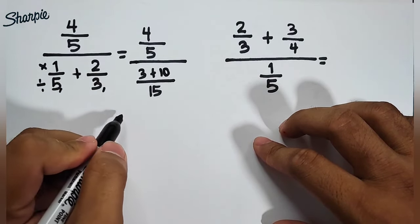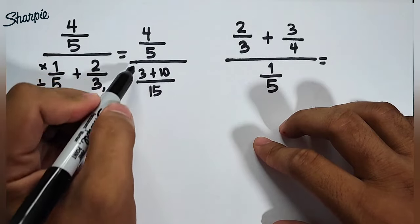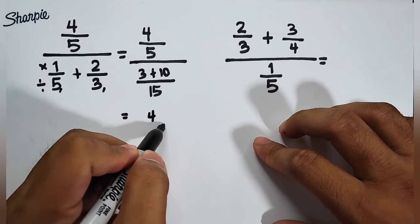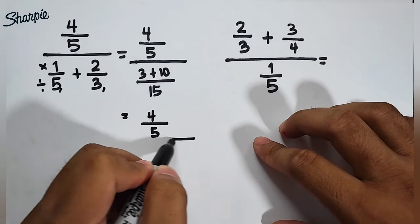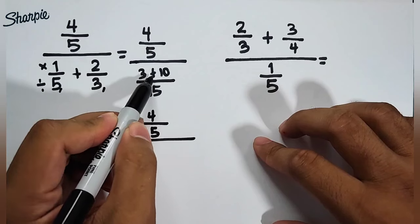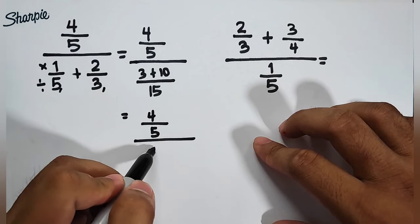So we need to simplify this, and it will become, copy, 4 over 5. We have 4 over 5 all over 3 plus 10, that is 13, over 15.